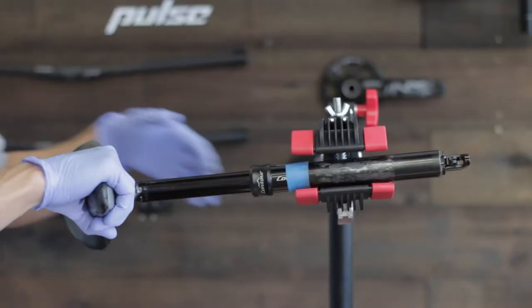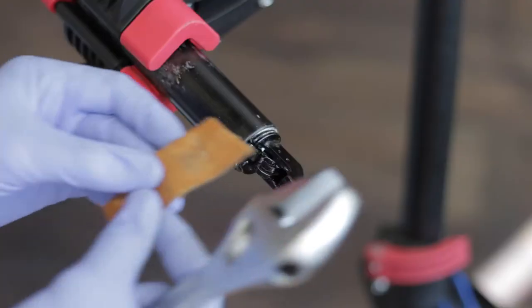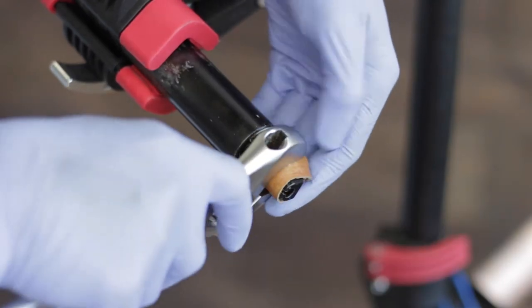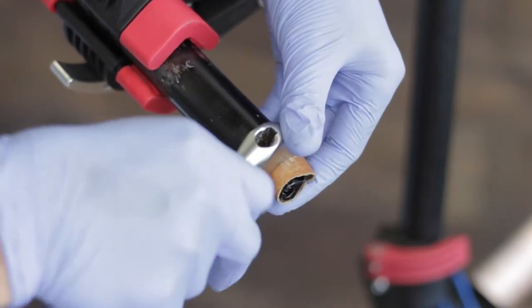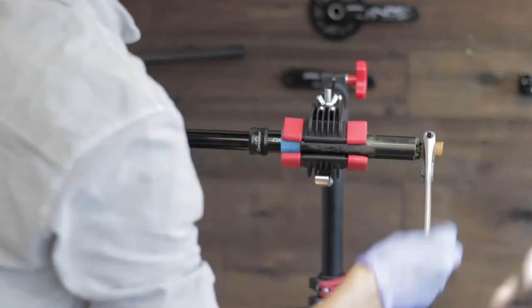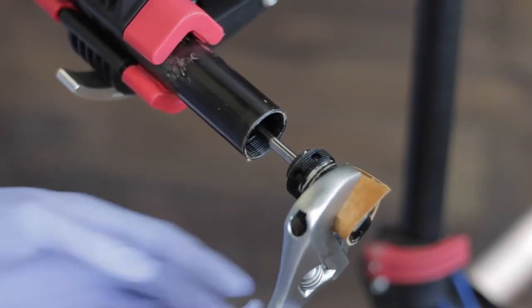It's time to open up the post. Clamp it in a work stand if you have one. Wrap your piece of leather around the lower mechanism. Adjust your shifting spanner to the right size and loosen the lower mechanism. You can hold your saddle for better leverage. Keep loosening until the lower mechanism slides out.